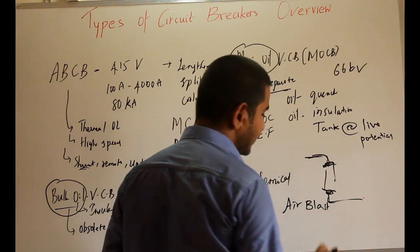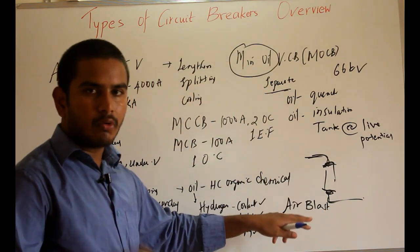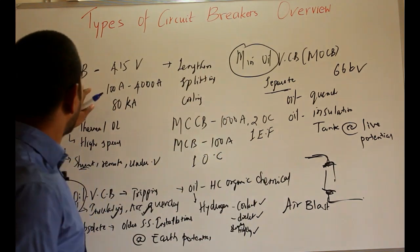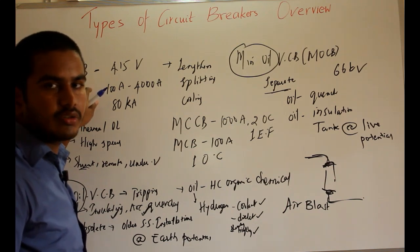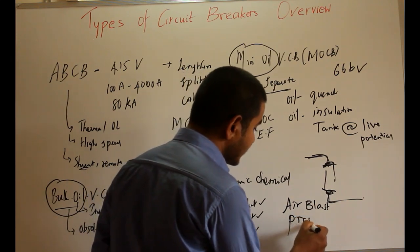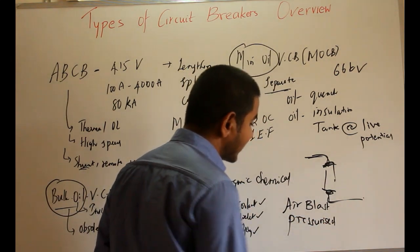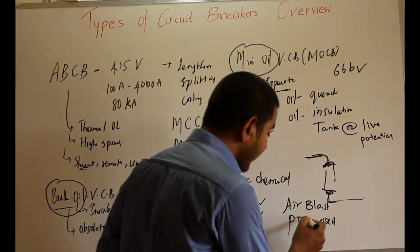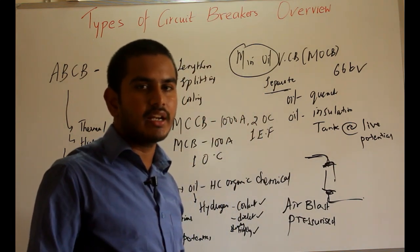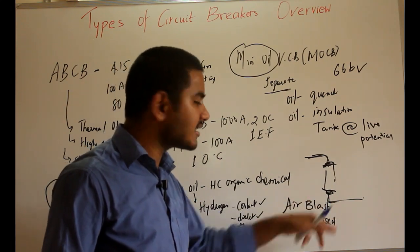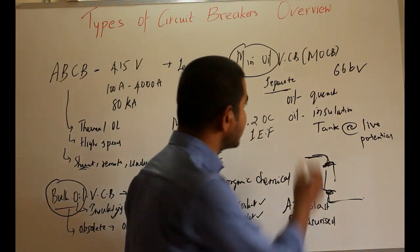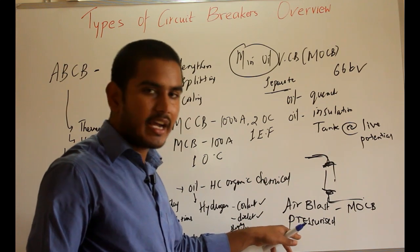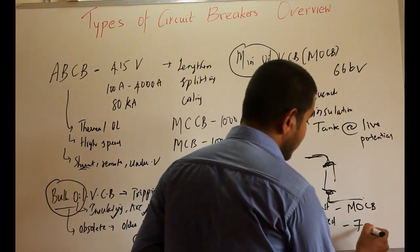Coming to the air blast circuit breaker: blasting or forcing the air under pressure increases its dielectric strength several times more than normal air at normal temperature and pressure. This fact, coupled with arc extinction using forced air, has made this air blast circuit breaker very popular, and it started replacing the minimum oil circuit breaker. As this pressurized air has high dielectric strength, it can be used up to 735 kV voltages.